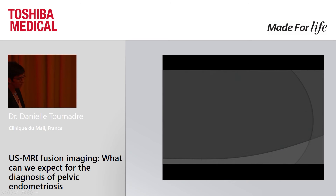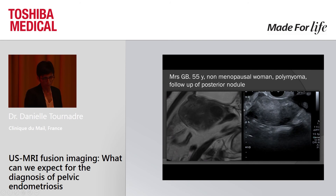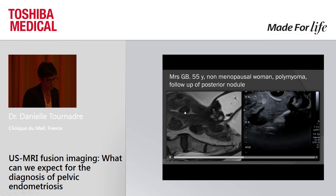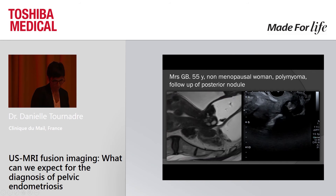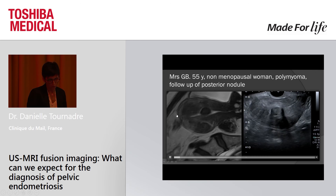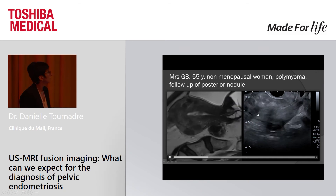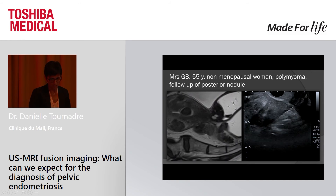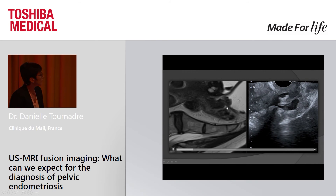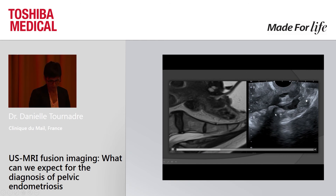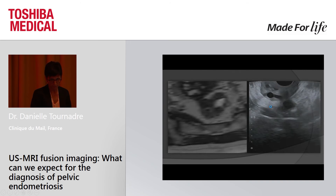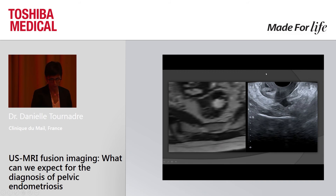Another case: a 55-year-old post-menopausal woman with a polymyomatous uterus, with a submucous myoma that facilitated synchronization. There is a large nodule on follow-up, the patient being quite asymptomatic. The nodule appears very similar on both MRI and ultrasound images. In the transversal plane also, the nodule on MRI and the nodule on ultrasound correspond closely.